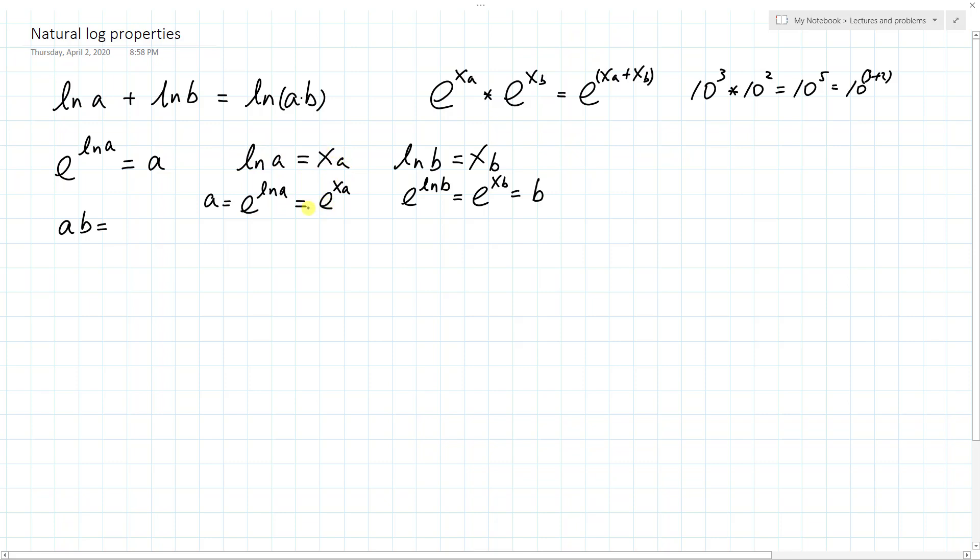So this side, according to the definition, is supposed to be a. And I did a similar thing for the b. So now, if I multiply a with b, I can use these instead of a and b.